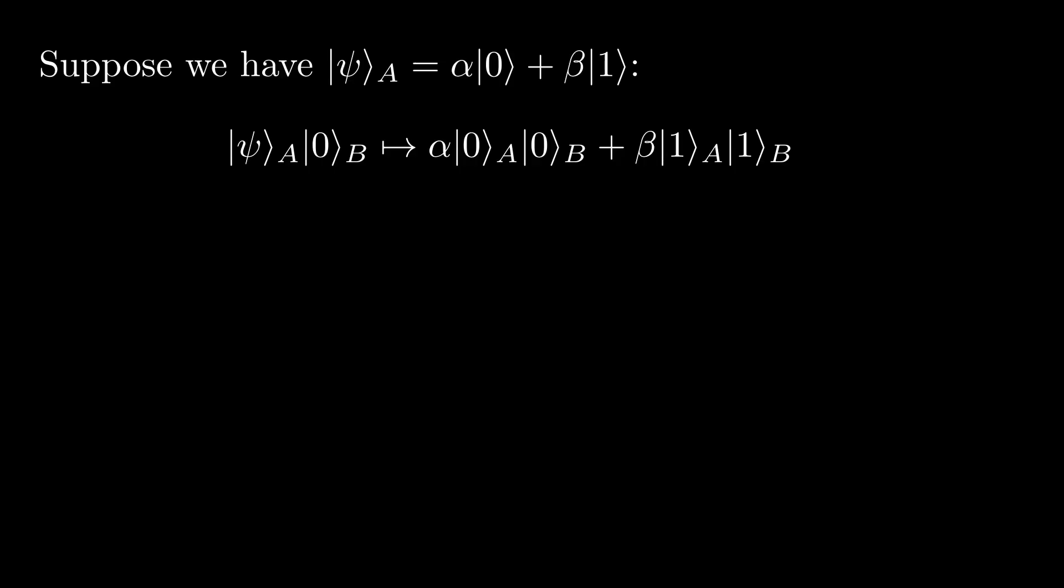But now, suppose I want to measure A in the 0-1 basis using the pointer qubit. How could this be possible? Well, recognizing that the measurement outcomes of A and B in the 0-1 basis are perfectly correlated, all we have to do is measure the pointer B, as a measurement outcome of 0 means that psi_A is now 0 and likewise for 1. Consequently, we can perform some measurements on A by measuring B.